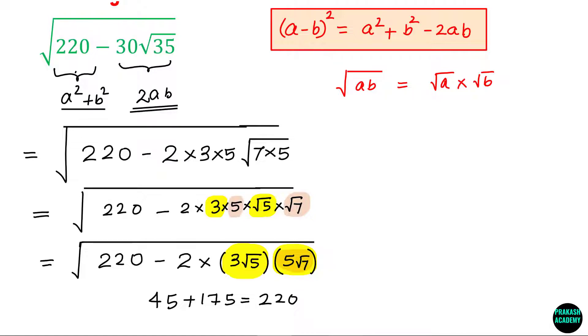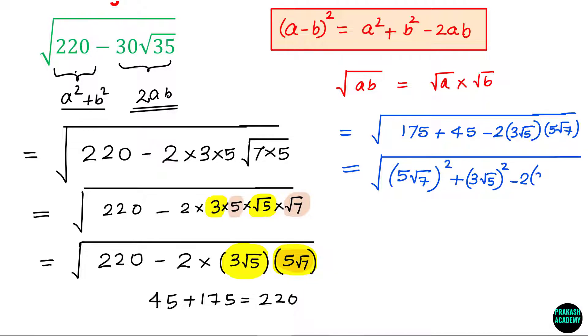Now I can rewrite the given expression. This becomes square root of 220, which can be written as 175 plus 45 minus 2 times 3 root 5 times 5 root 7. So this becomes 175, which is nothing but 5 root 7 whole square, and 45 is nothing but 3 root 5 whole square, and this is nothing but 2 times a times b, that is 2 times 3 root 5 times 5 root 7.